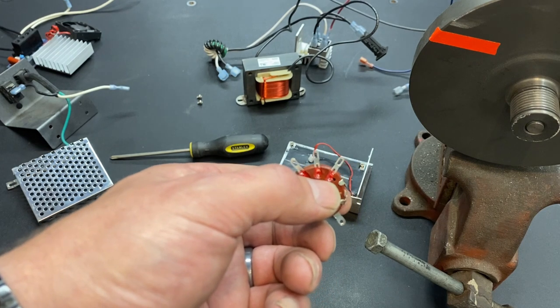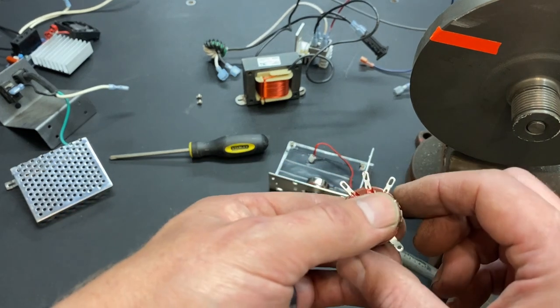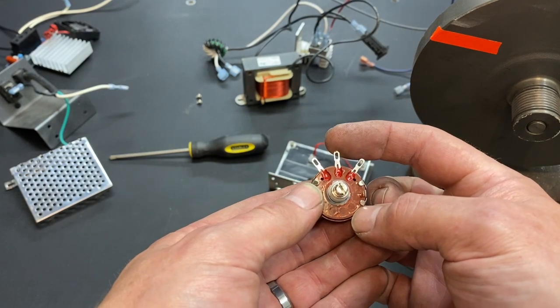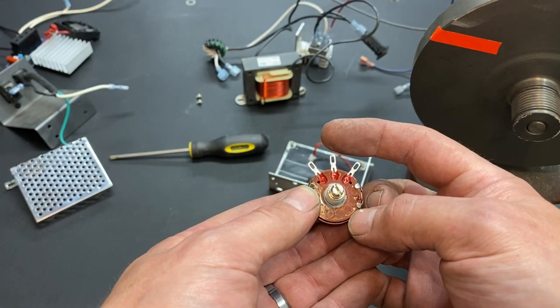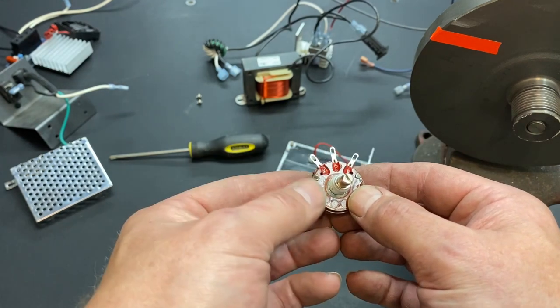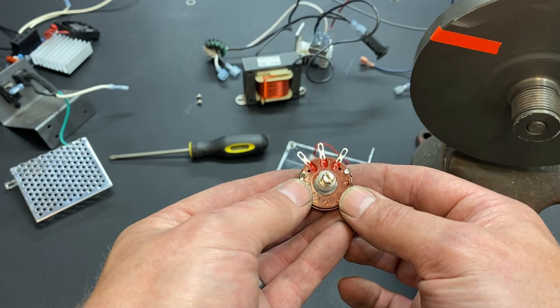It probably originally came from the factory with three terminals. Now, the way a potentiometer works is the middle is the output. So, you always use the middle one. The one on the left and the one on the right are somewhat interchangeable.